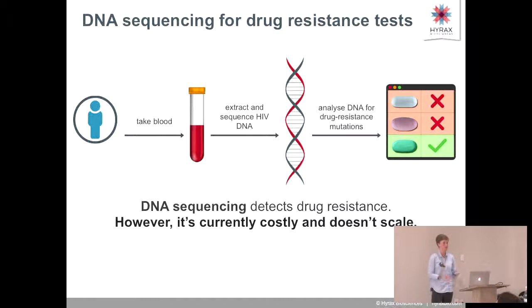DNA sequencing is the way you do a drug resistance test. You take blood from a patient, extract and sequence the HIV DNA in that blood, analyze that DNA for drug resistance mutations, and ideally you get a report that says this patient can take these drugs but not these drugs. That's the dream.